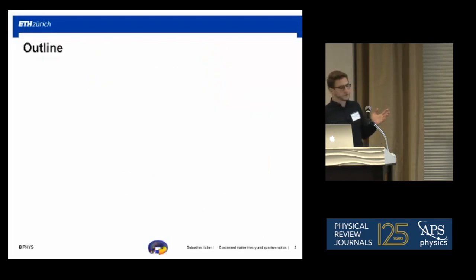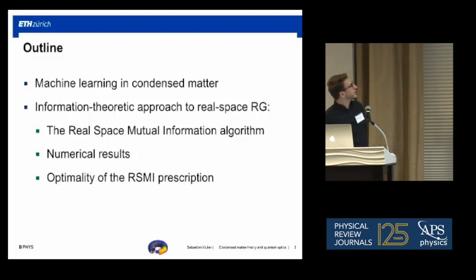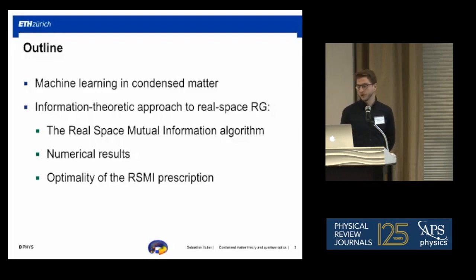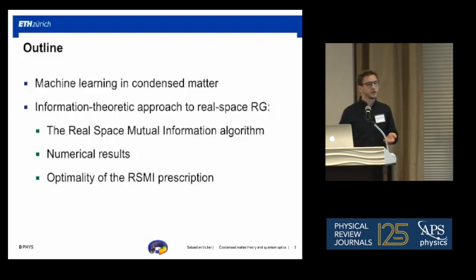The outline of the talk is as follows. I'll give you a few sentences about the relation between machine learning and condensed matter physics before jumping into the main part, which concerns our information-theoretic approach to real-space RG. I'll describe a machine learning algorithm inspired by this and show results that are both numerical and analytical.